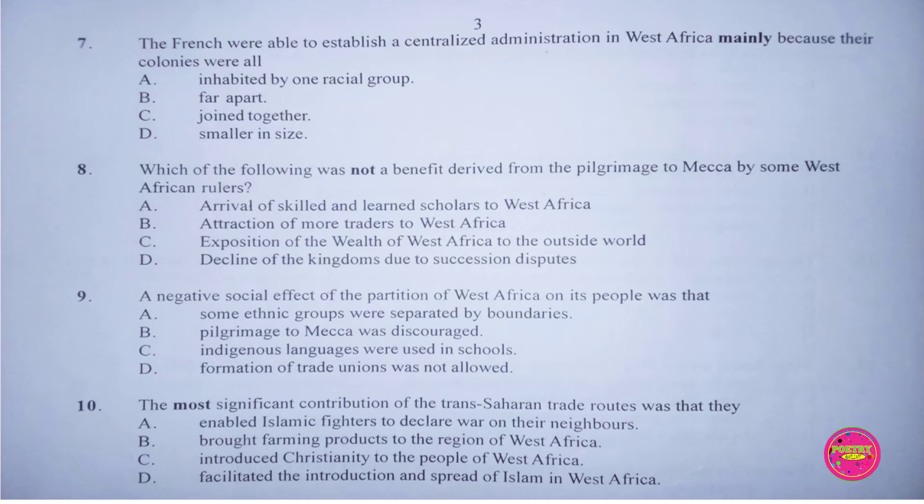Question 9. A negative social effect of the partitioning of West Africa on its people was that: A. Some ethnic groups were separated by boundaries, B. Pilgrimage to Mecca was discouraged, C. Indigenous languages were used in schools, D. Formation of trade unions was not allowed. The correct answer to this question is A. Some ethnic groups were separated by boundaries.